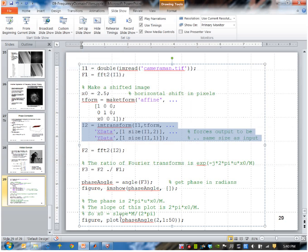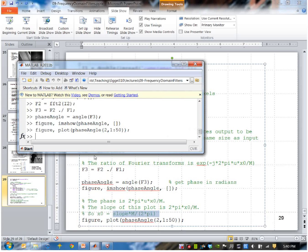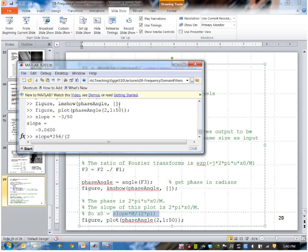The slope is 2π x0 over M. So that means if I solve for x0, it's the slope times M over 2π. So if I go ahead and solve for that, slope I said was minus 3 over 50. So slope multiplied by M, M is the size of this image, which is 256 by 256, divided by 2 times π. That gives us a slope of minus 2.4446, which is pretty close to my actual shift that I provided, which was 2.5.